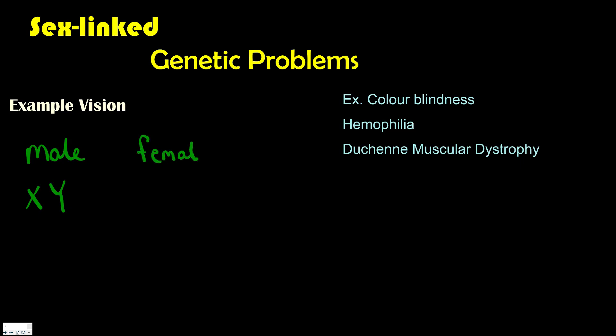Some disorders associated with sex-linked genes are colorblindness and hemophilia — we're going to see examples with the royal family and their pedigree, looking at who carries the hemophilia gene — and also Duchenne muscular dystrophy.